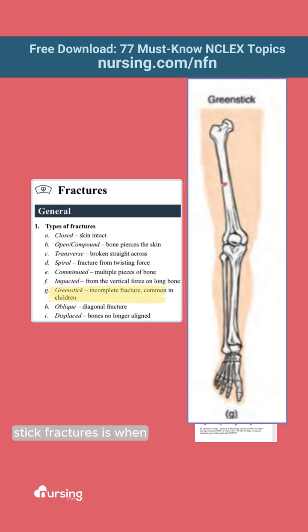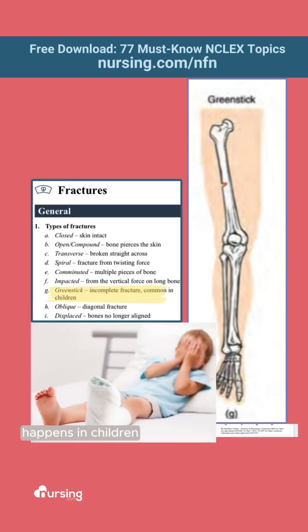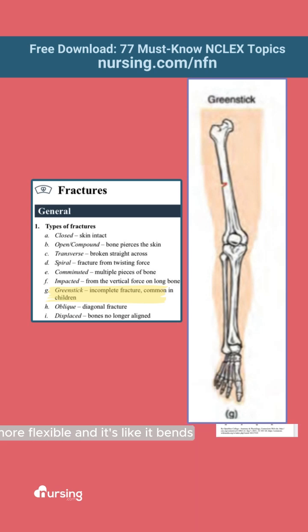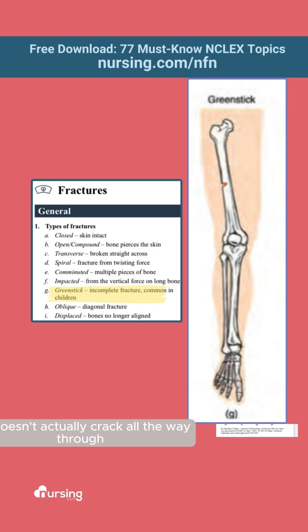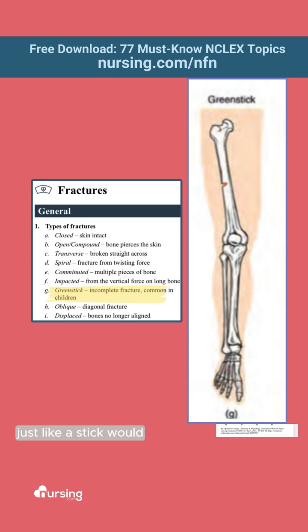Greenstick fractures is when it doesn't fracture all the way through. It happens in children when their bones are still a little bit softer and more flexible — it bends but only splinters on one side and doesn't actually crack all the way through, just like a stick would.